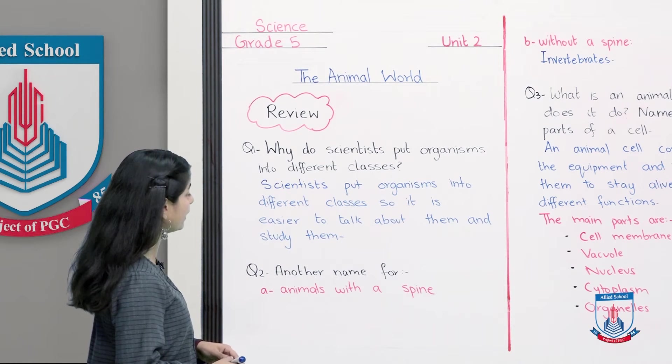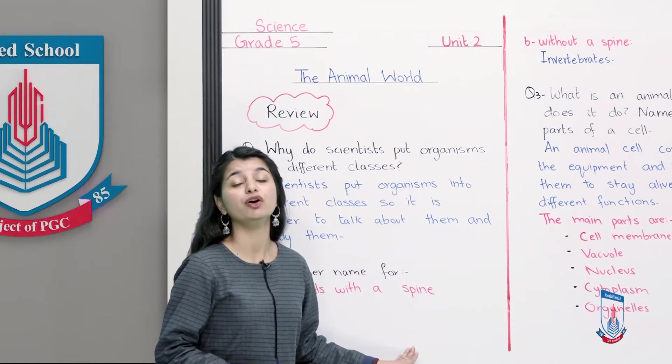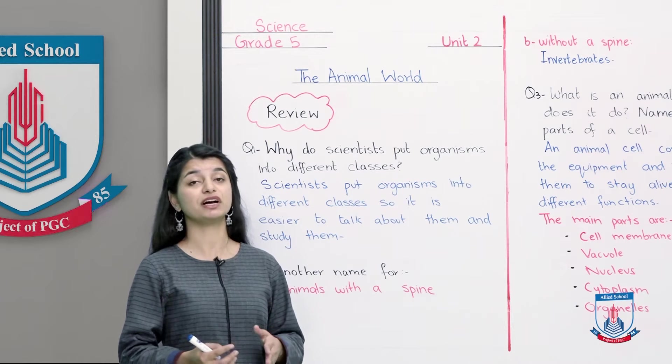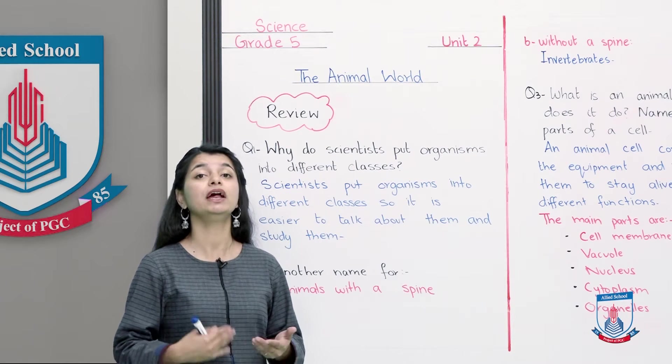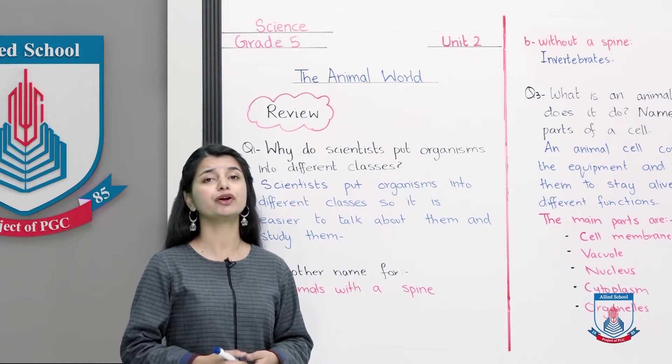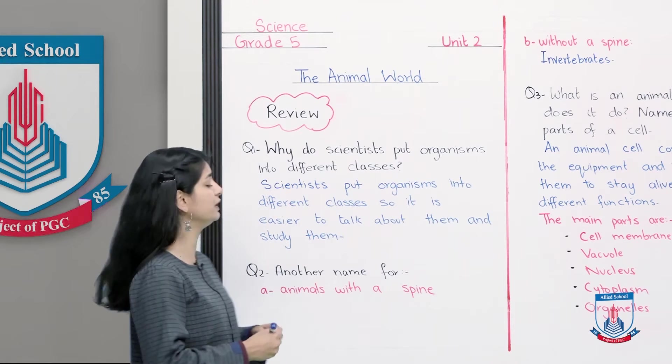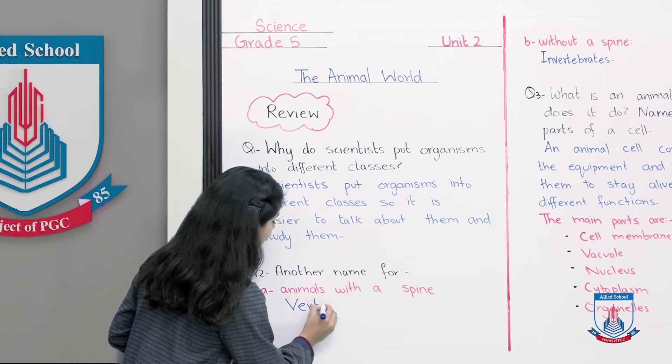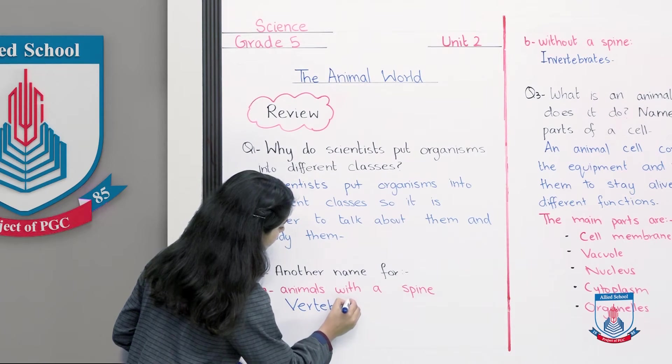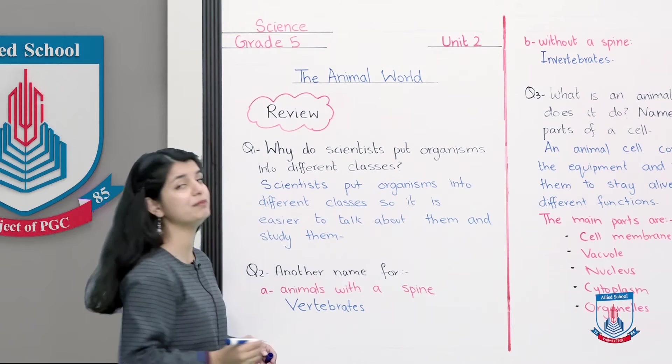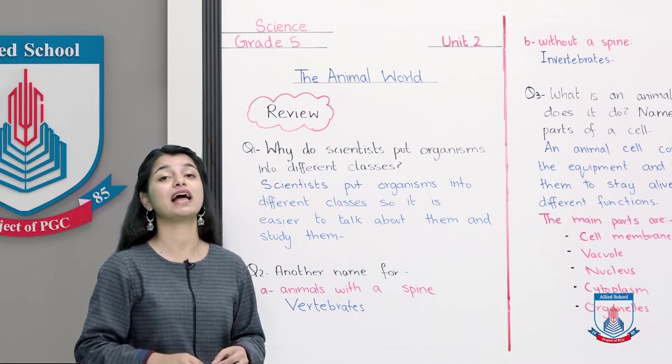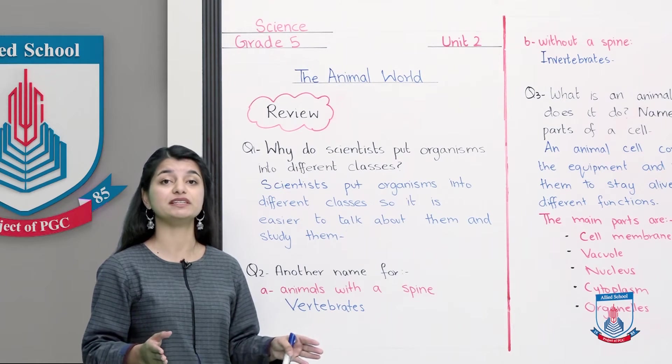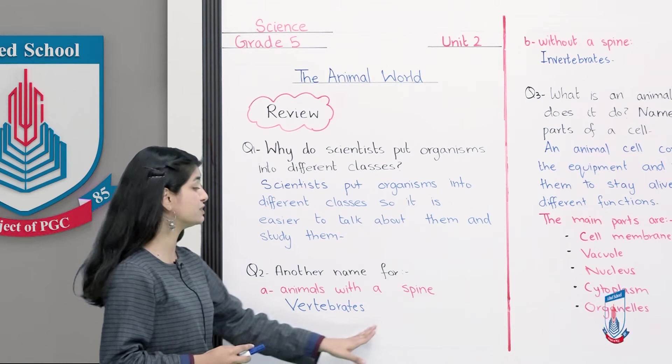Now we can talk about question number 2. What is another name for animals with a spine? Over here, basically, you will tell what is another name of the animals whose spine exists, or whose backbone exists. And do you recall what that was? Excellent, it was very simple. We call them vertebrates. So in the very beginning of the lecture, when we discussed the two major classifications in the animal group, they were vertebrates and invertebrates.